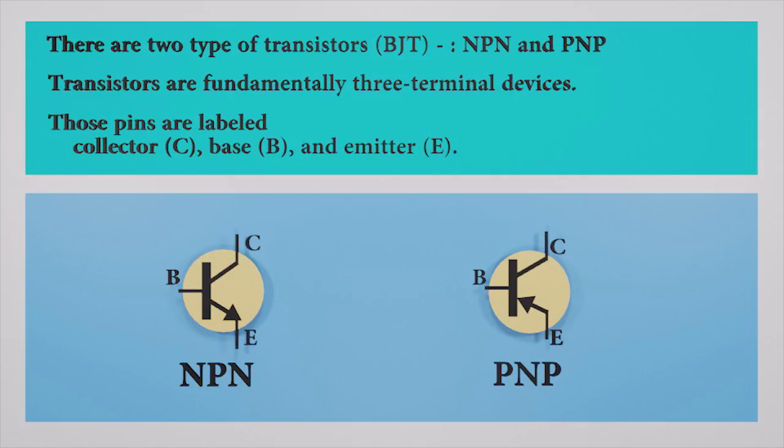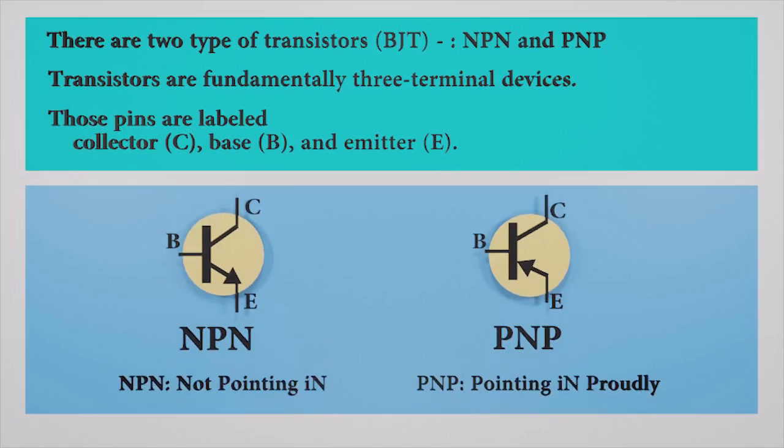The circuit symbols for both are like this. The only difference between an NPN and PNP symbol is the direction of the arrow. On the emitter, the arrow on the NPN points out, and on the PNP it points in.